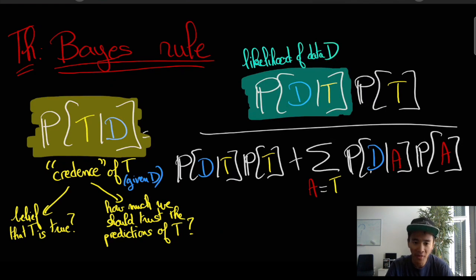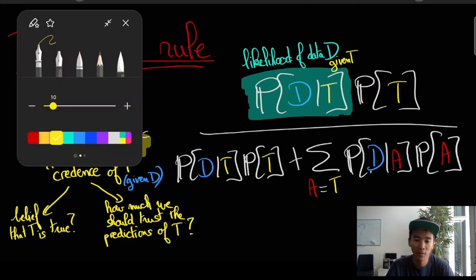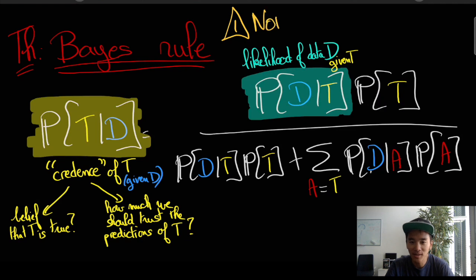In particular, the first term on the right-hand side the probability of the data given T is also called the likelihood of the data. And one thing that is, I think, very important to insist on is the fact that the probability of the data, also called the likelihood of the data is not the credence of a theory.